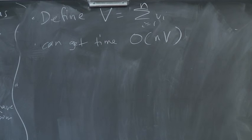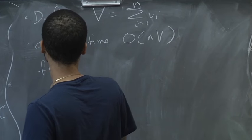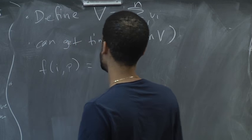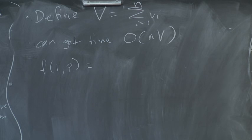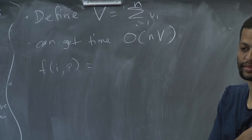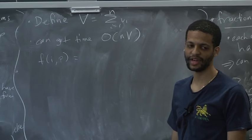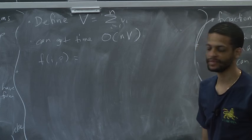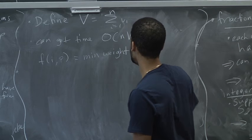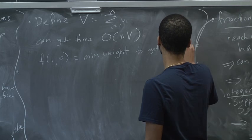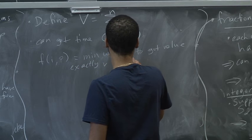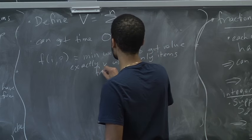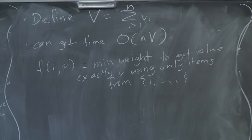You could also get time O(nV) where V is the sum of all vi. You define f(i,p) as the minimum weight to achieve value exactly p using only items from {1,...,i} — a different DP. You can set up a recurrence to fill this table out as well.